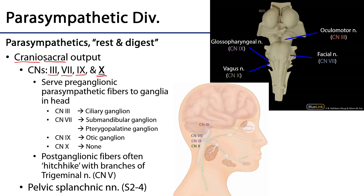Most of these are going to serve various pre-ganglionic parasympathetic fibers to head ganglia. For instance, the oculomotor nerve, cranial nerve 3, serves pre-ganglionic fibers to the ciliary ganglion — a ganglion that sits just under the optic nerve and is going to serve the eye, specifically the sphincter pupillary muscles of the eye.